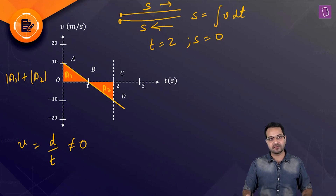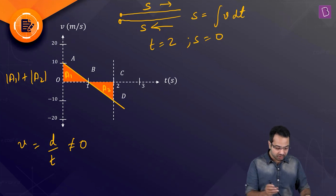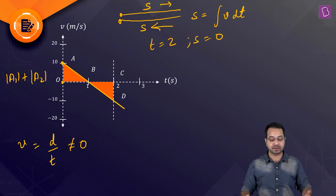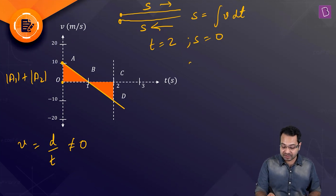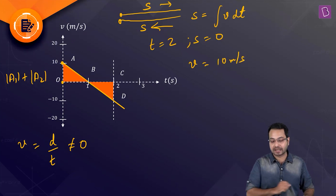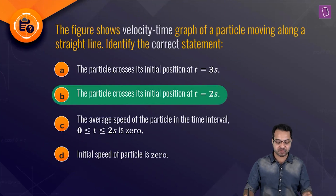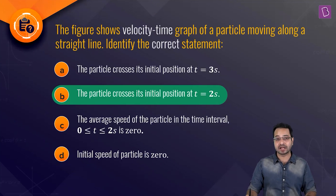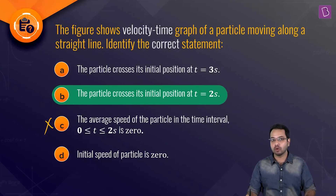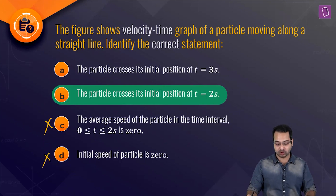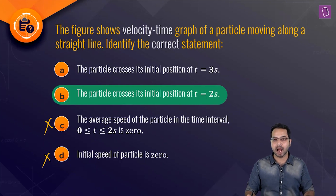The last thing to check is the initial speed of the particle. At t = 0, the velocity from the graph is 10 m/s. The magnitude of instantaneous velocity gives instantaneous speed, so the initial speed is 10 m/s — not zero. Therefore option B, the particle crosses its initial position at t = 2 seconds, is the correct answer.